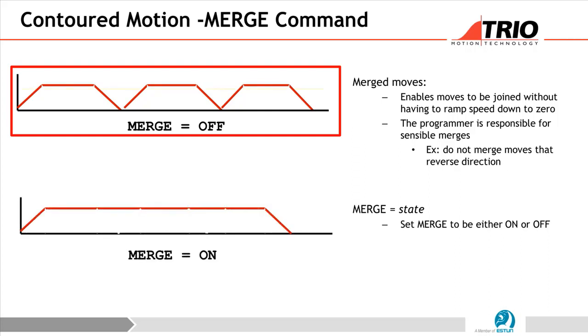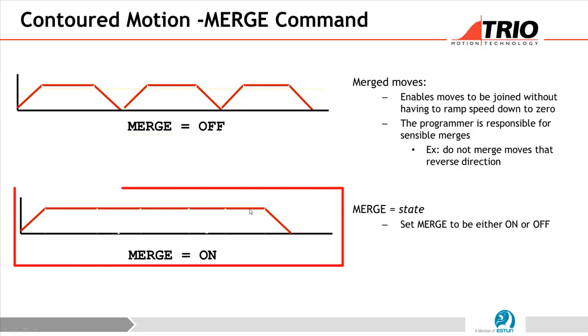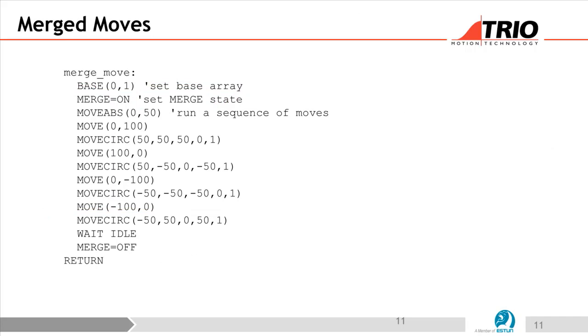You can see there's some disjointment when merge is not set and how when the merge is on. For merged move, you set the merge on, then run a sequence of moves. You can see that when you move this, we will do this move and then we see how it looks like from the oscilloscope.